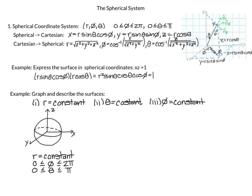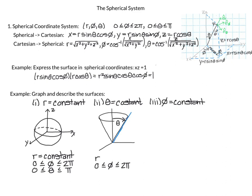Second, theta equals a constant: here r ranges from 0 outward and phi circles around. Because theta is the angle from the z-axis and phi covers the full circle, this produces a cone shape — an inverted cone.